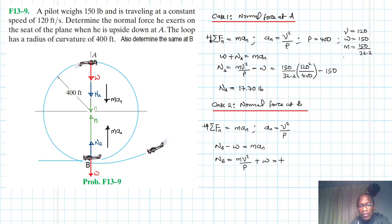This is equal to 150 divided by 32.2 times 120 squared divided by 400 plus the weight. Therefore N_B, which is the normal force exerted on the seat by the pilot when the aircraft is at B, is 150 divided by 32.2 times 120 squared divided by 400 plus 150. We have 317.70 pounds.